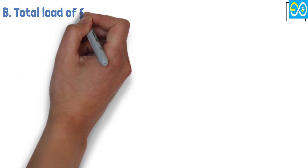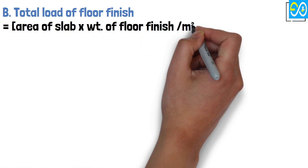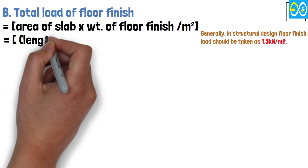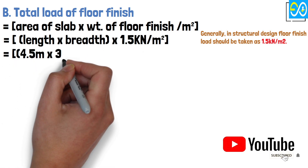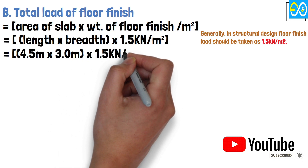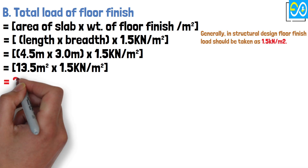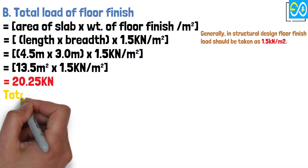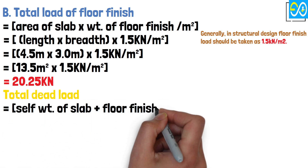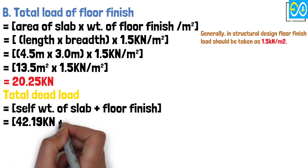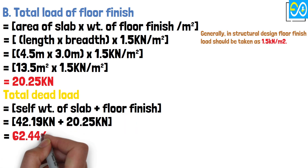The total load of floor finish equals area of slab times weight of floor finish equals length times breadth times 1.5 equals 4.5 times 3.0 times 1.5 equals 13.5 times 1.5 equals 20.25 kN. Total dead load equals self-weight of slab plus floor finish equals 42.19 plus 20.25 equals 62.44 kN.